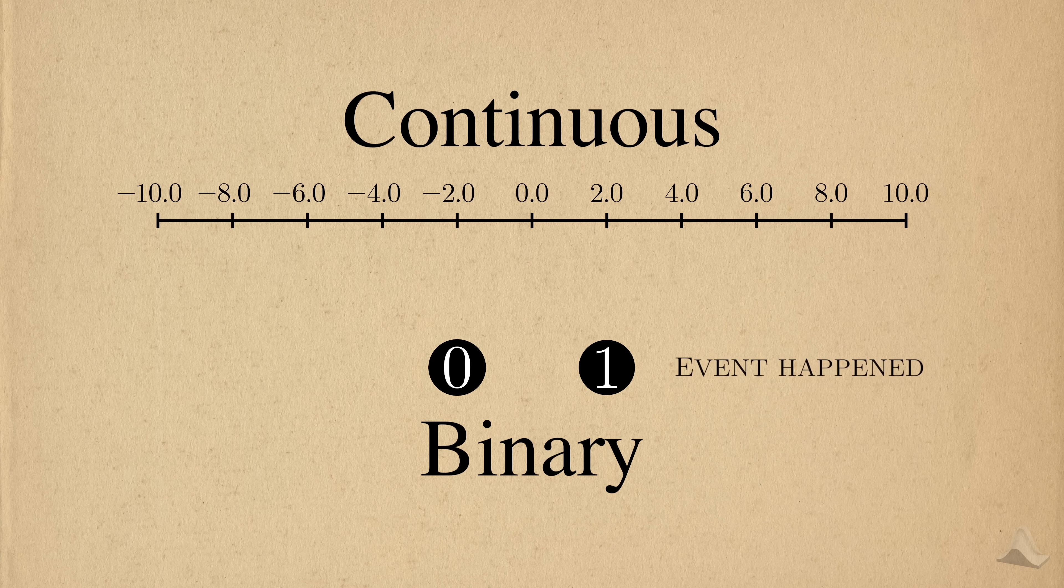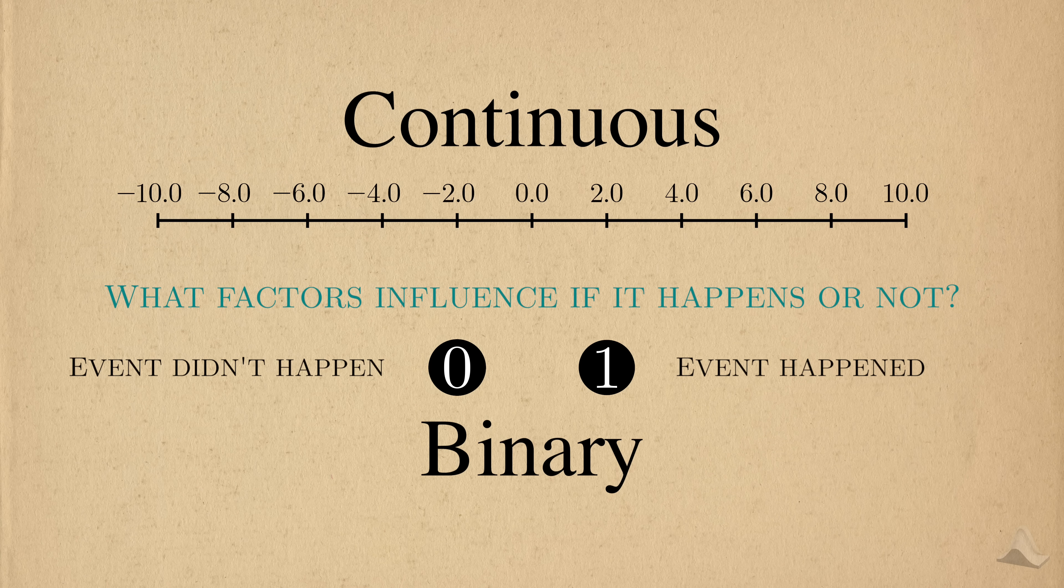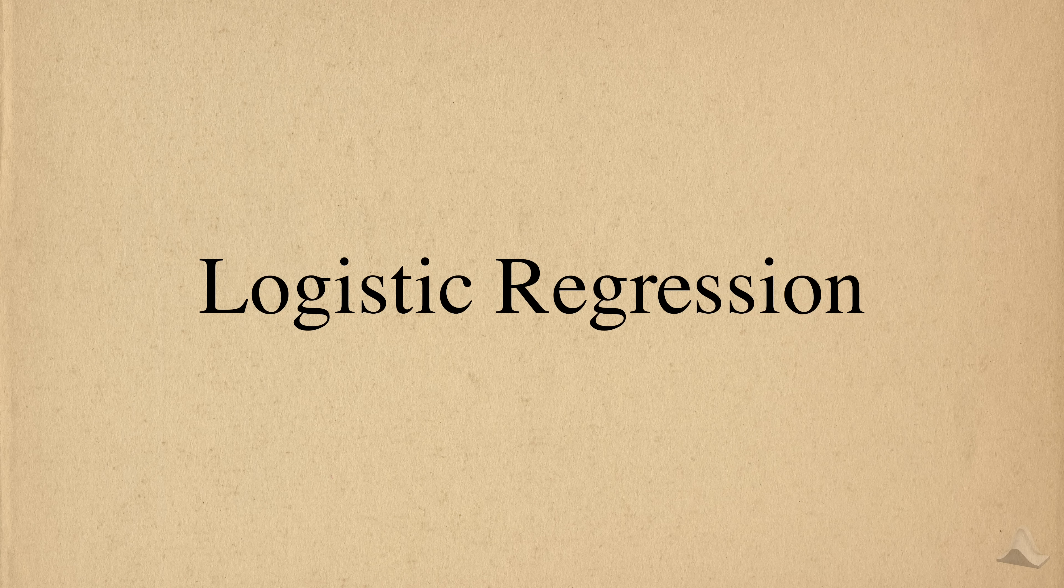For our purposes, we represent an event happening with the value 1 and 0 when it doesn't happen. We're often interested in what factors influence the chance that events like these happen. In the realm of statistics, the workhorse model for this type of problem is logistic regression.